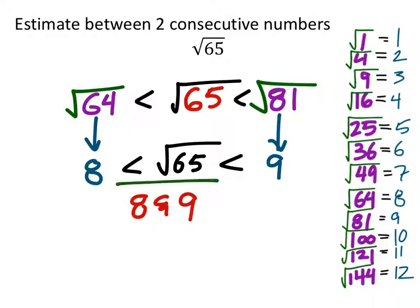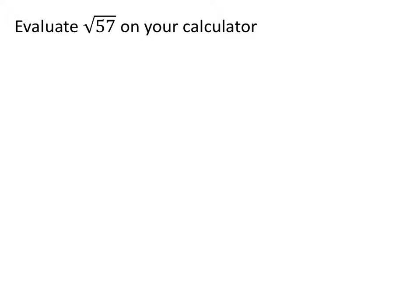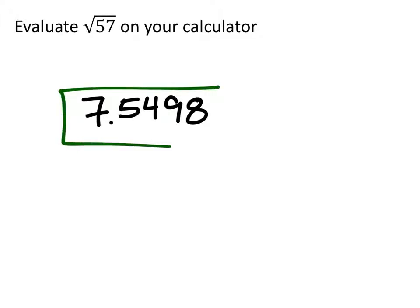This one strictly wants an evaluation of the square root of 57 on a calculator. I'm going to type it in exactly and get the decimal value to four decimal places. That would be 7.5498.